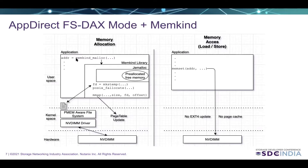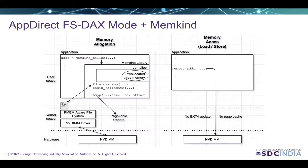Whenever an application wants to use persistent memory, it must include the MemKind library. MemKind is a wrapper around jemalloc, an open-source memory allocator. Internally, MemKind creates a temporary file on top of the PMM-aware file system and does the memory mapping. Whenever an application requests memory, MemKind first tries to satisfy that request from already allocated memory. If not, it extends the already-created file, does the memory mapping again, and returns the memory to the application. This file extension is an expensive operation because it involves an EXT4 metadata update. So in summary, in FSDAX mode, memory allocation can be an expensive operation.